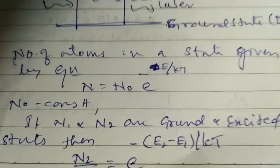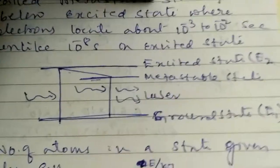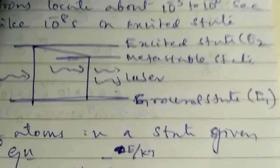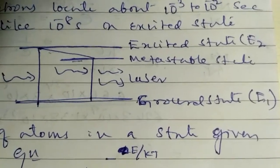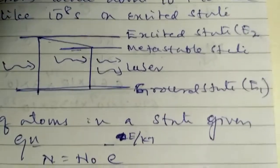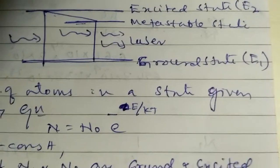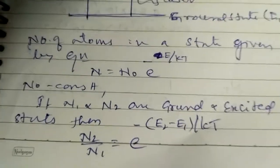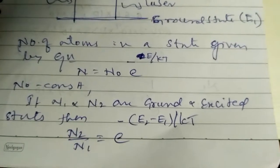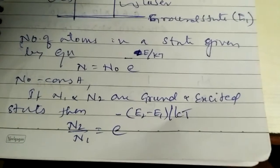For example, consider two states: the excited state E2, the ground state E1, and in between, the metastable state. If N1 and N2 are the populations of the ground state and excited state respectively,